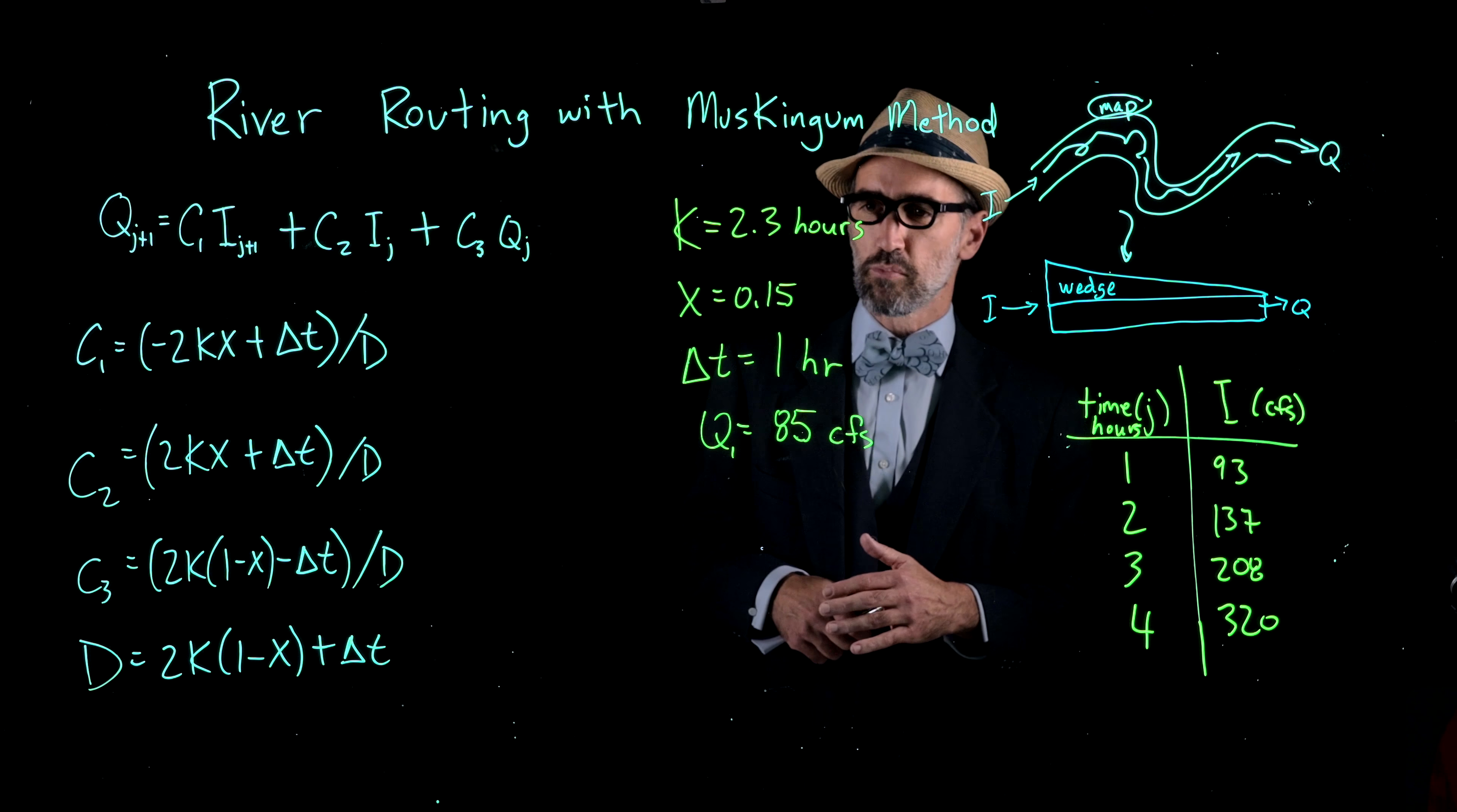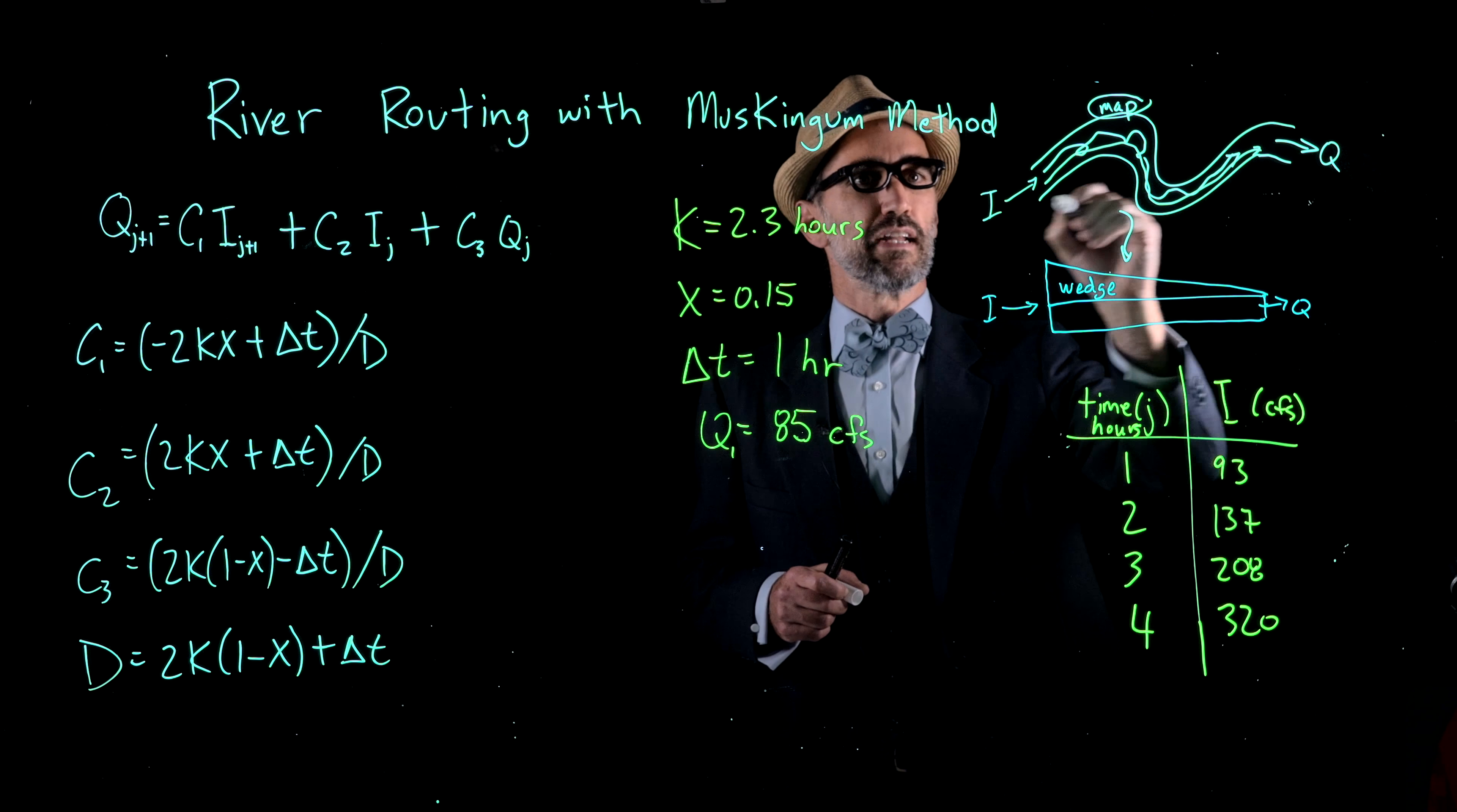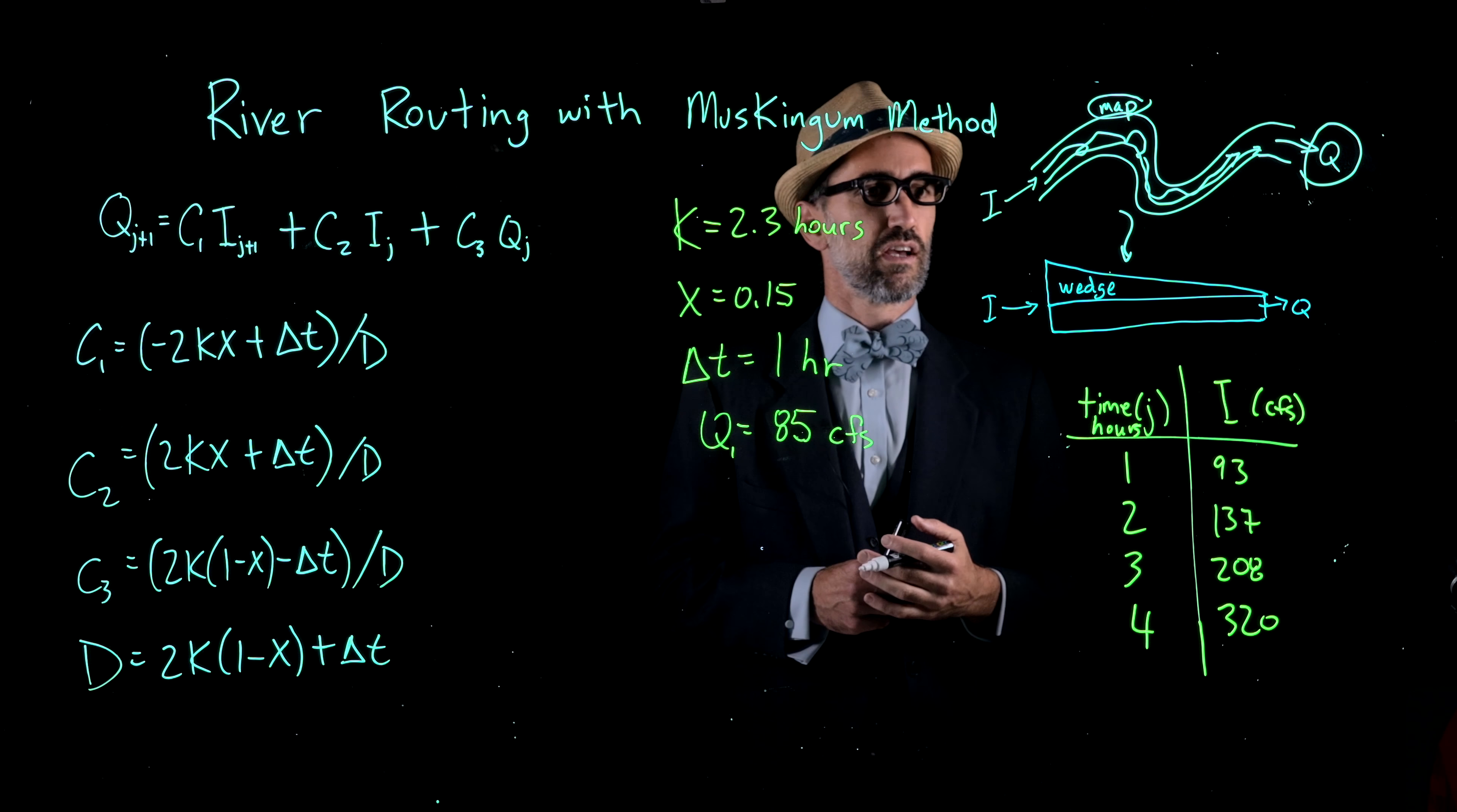The level pool method is more appropriate for reservoirs or lakes. In this case we have flow in a river. We have a stream flowing in a river, an input to this channel, and an output from this channel. What we're trying to solve for fundamentally is this Q and how this Q or stream flow changes through time.